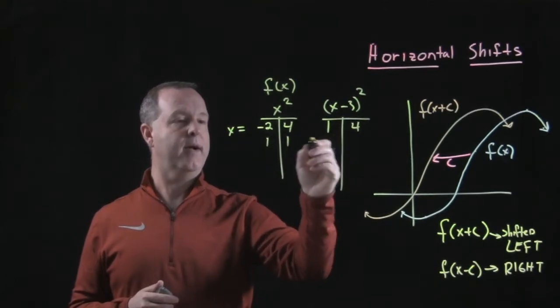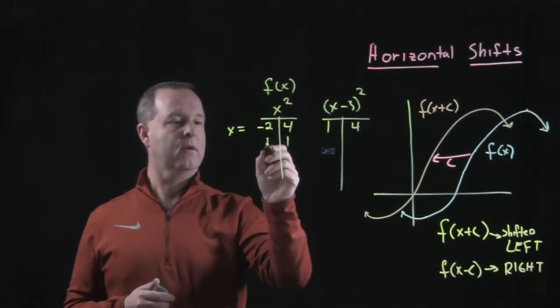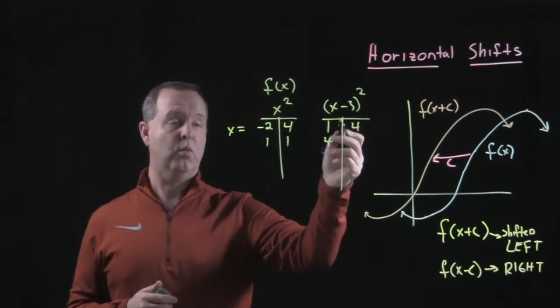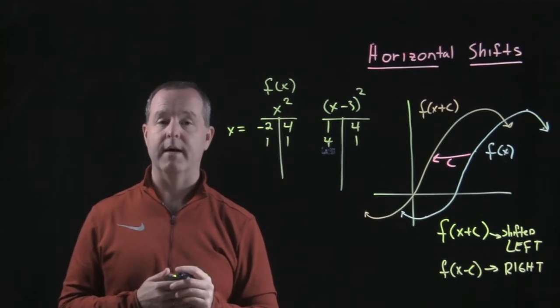Three units to the right is 4. Put that into the function: x minus 3 was 1, 1 squared becomes 1.